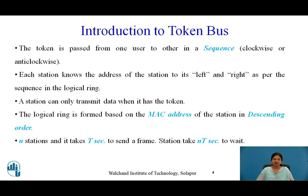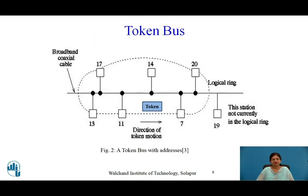If there are N stations in a network and it takes T seconds to transmit data, then the remaining stations have to wait N×T seconds. This N×T seconds is the waiting time for all stations present in the network.